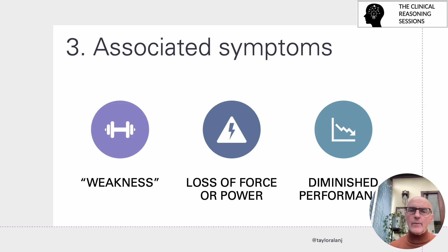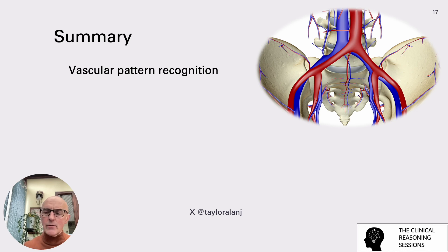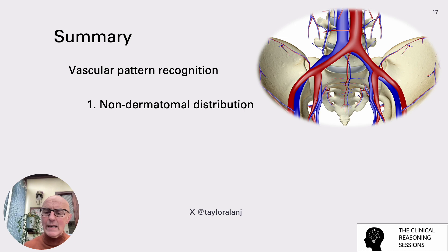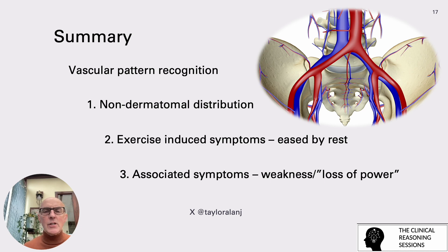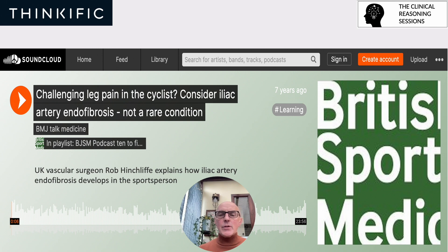So those are the three key things for your vascular pattern recognition summary. First, does the pain follow a dermatomal distribution or is it vague and affecting the whole limb in an unusual way? Second, are the symptoms exercise-induced — very different from mechanical — and are they eased by rest? And for elite athletes, at what heart rate level do they need to be? Third, and above all, are there associated symptoms linked to weakness or loss of power? If those three things combine, you should have a higher index of suspicion of a vascular condition and proceed with the correct physical examination.